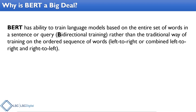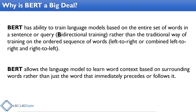BERT is different in that it has the ability to train language models based on the entire set of words in a sentence or query — that's where the bi-directional comes from. Traditionally, Google understood queries from a left-to-right or left-to-right and right-to-left sequence of words, which isn't always how people speak or communicate.